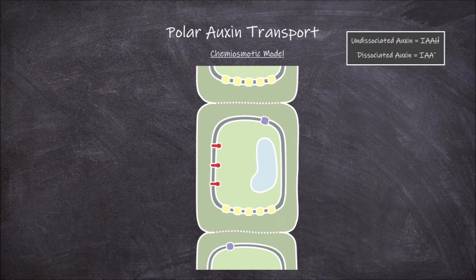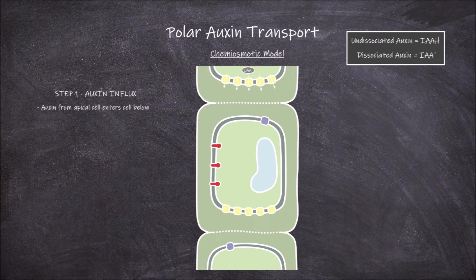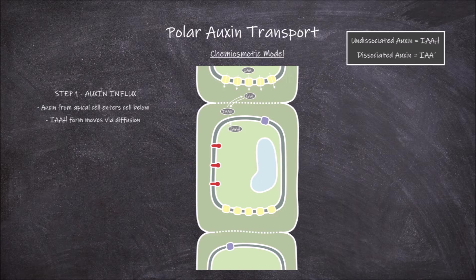There are four general steps that occur in the process of auxin transport through cells. The first step is auxin influx into the cell. This step involves auxin from the more apical cell entering the more basal cell. This auxin influx occurs in one of two ways. Auxin in the undissociated form is able to move by passive diffusion across the cell membrane into the cytosol of the cell.